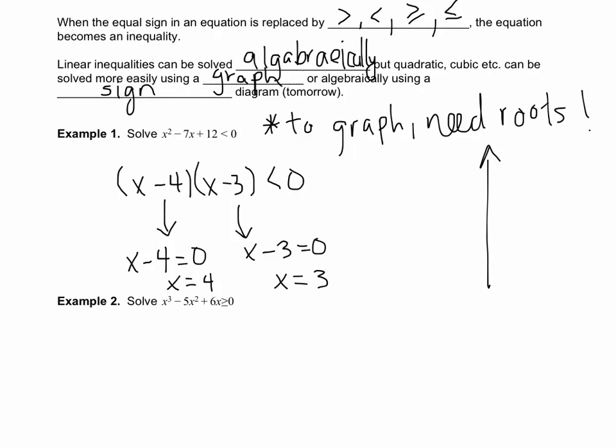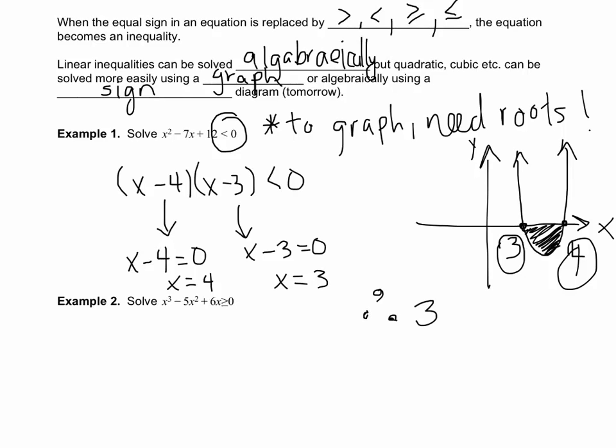If we were to graph this, let's just do a quick sketch here. We would have a quadratic function with roots at 3 and at 4. Now what we're going to do is look at our graph and see where our function is less than 0. Our function is less than 0 in this region here, meaning that between the values of 3 and 4 our function is less than 0. That means our solution is 3 < x < 4.